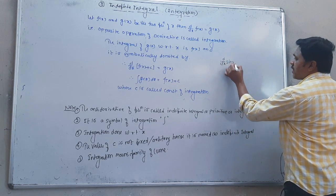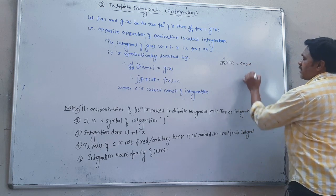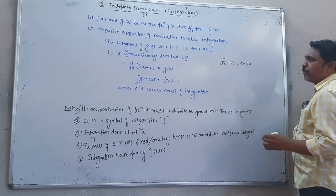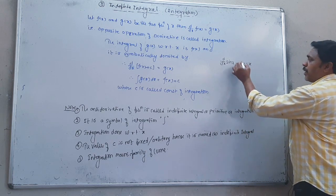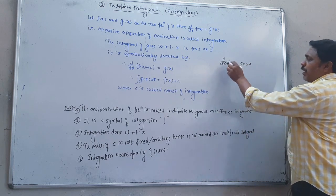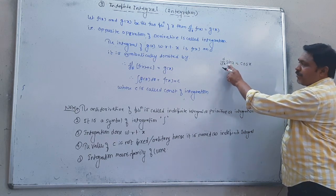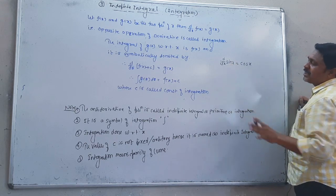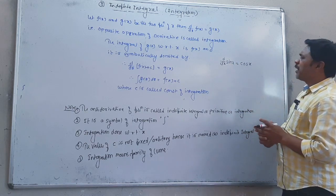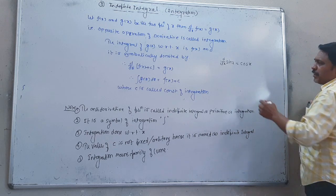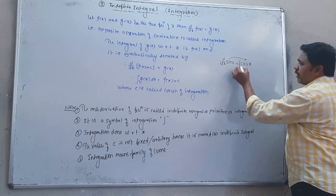For example, the derivative of sine x is cos x. So the opposite operation of derivative is called integration. Since the derivative of sine x is cos x, the integration of cos x is sine x.